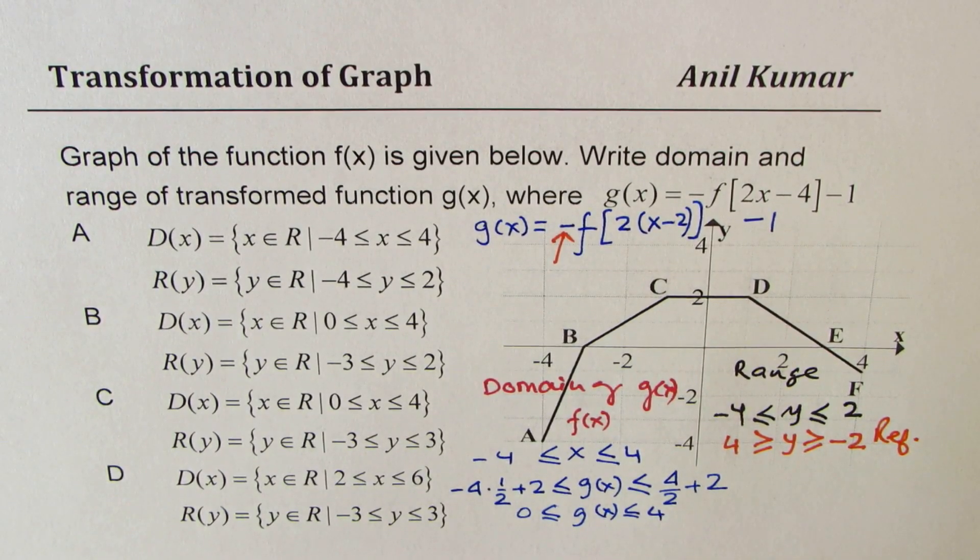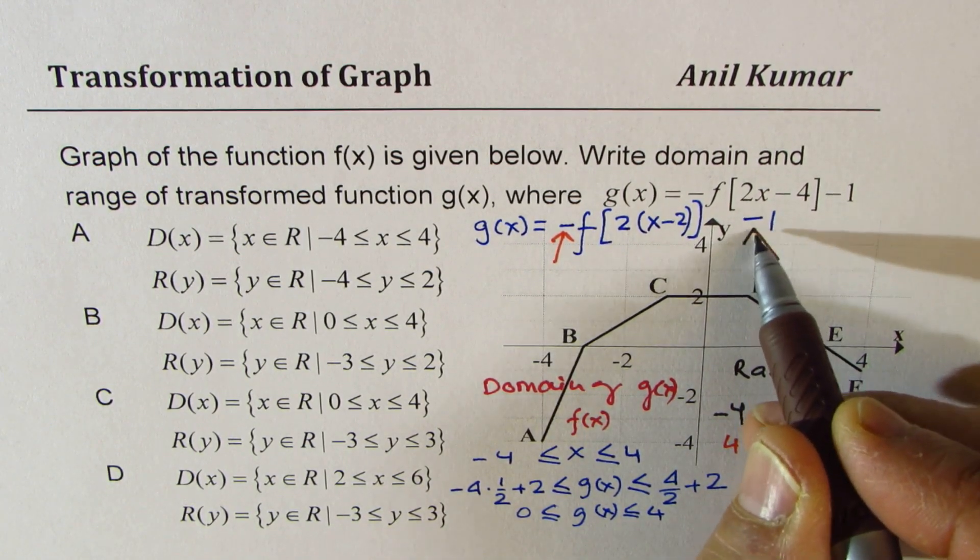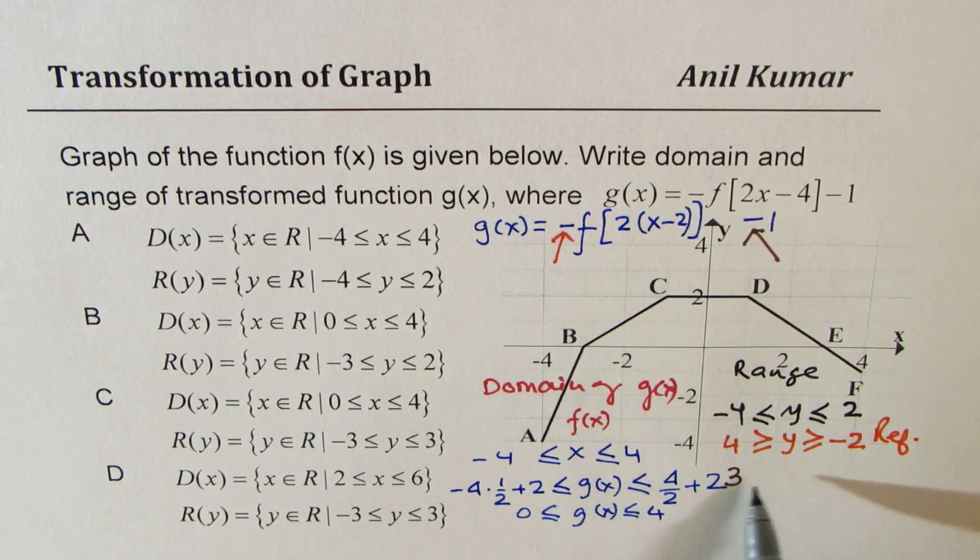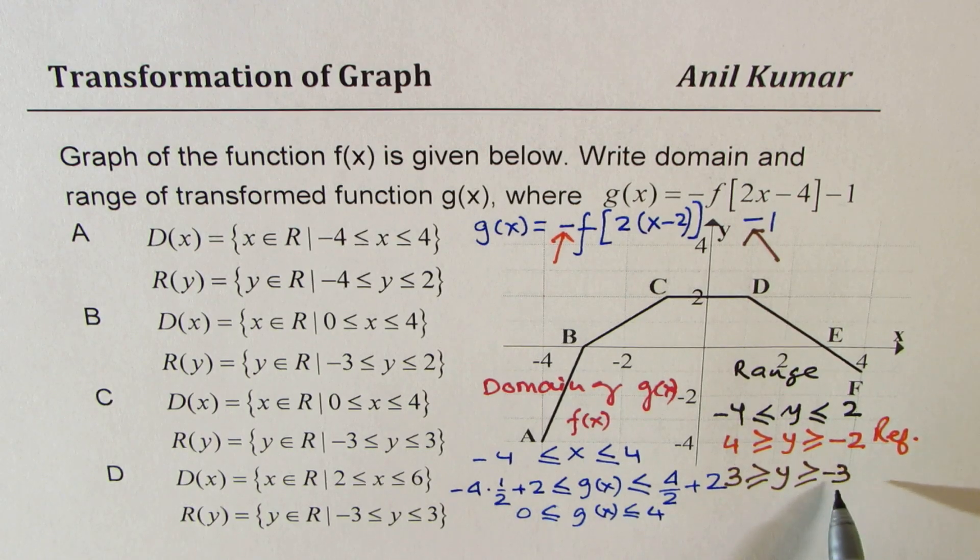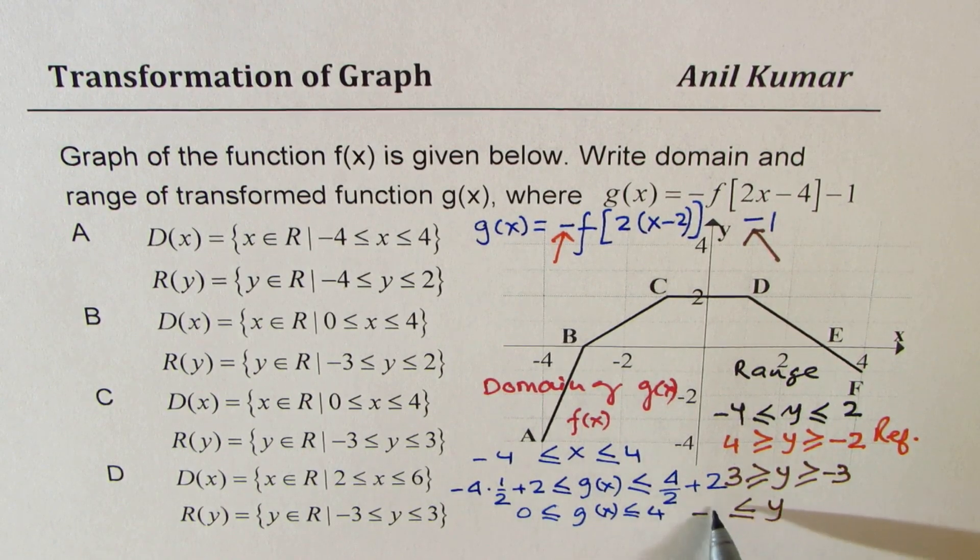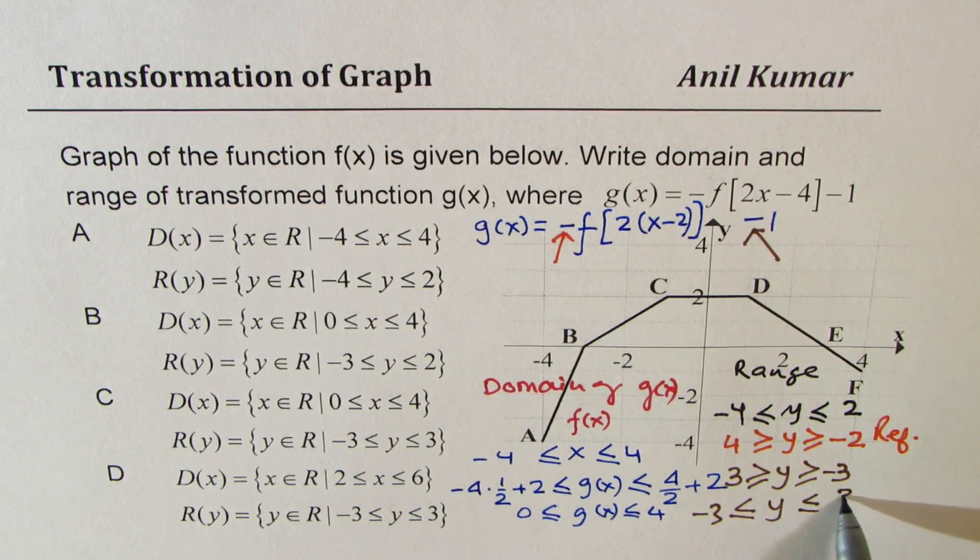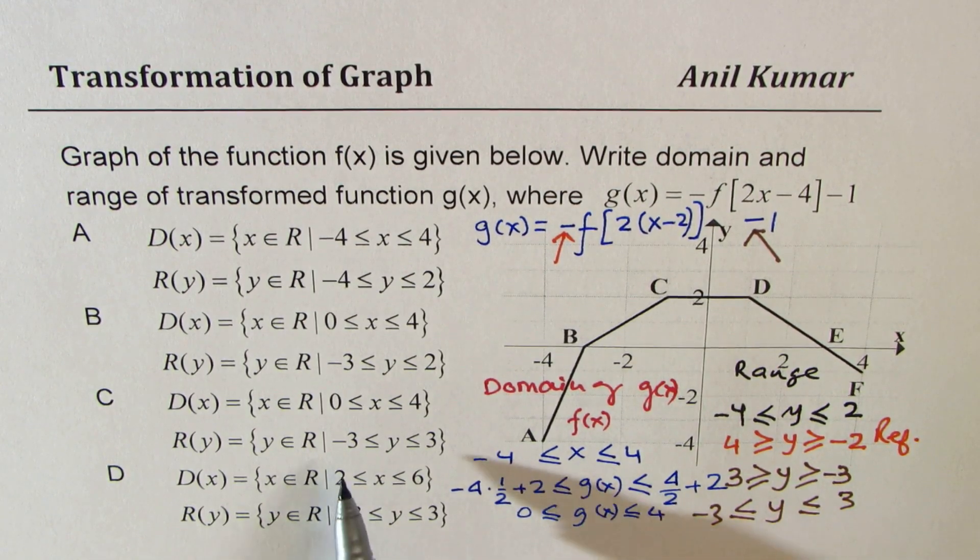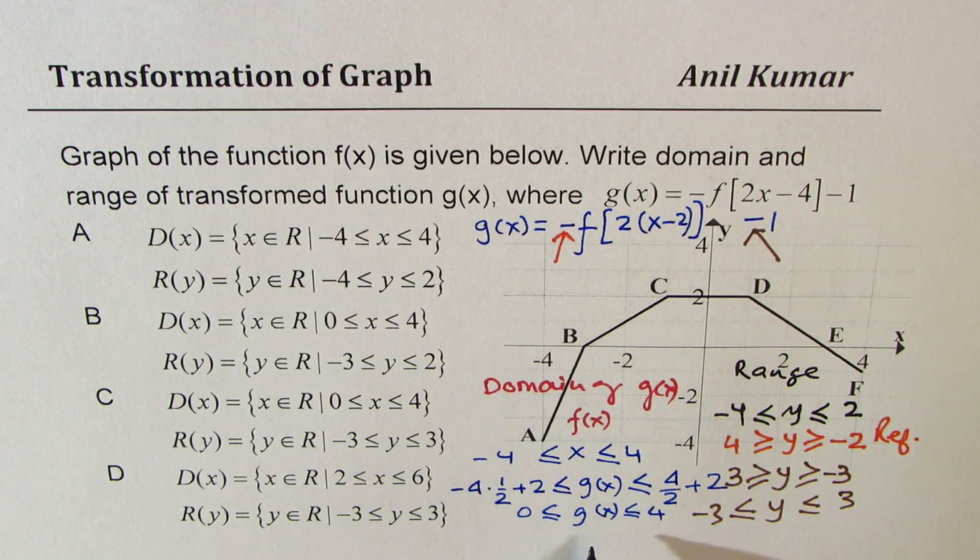And now we are going to take care of translation, which is minus 1. So if I take away 1 from here, I get 3. y value becomes between minus 3 and 3. So which is y is greater than or equal to minus 3, less than or equal to 3. So y is between minus 3 and 3, and g of x, x is between 0 to 4.